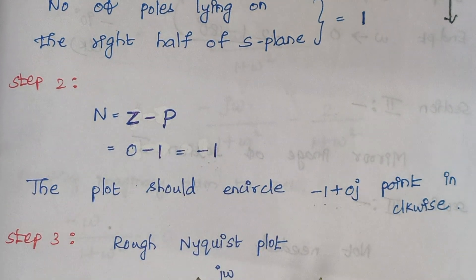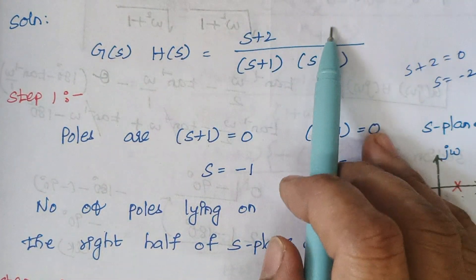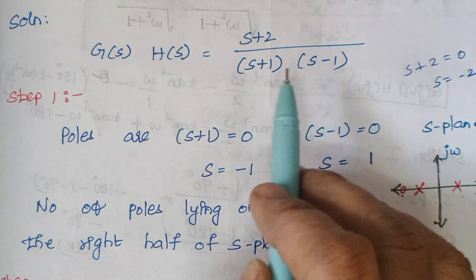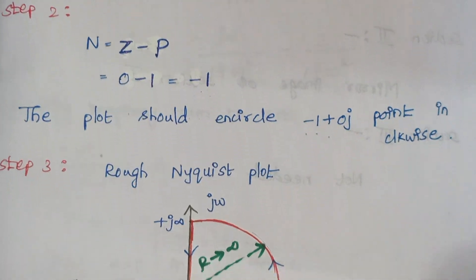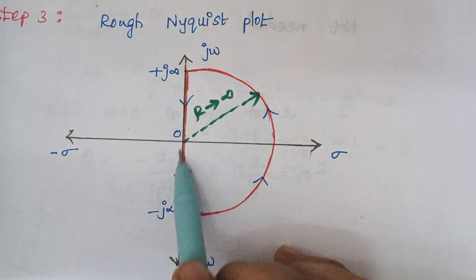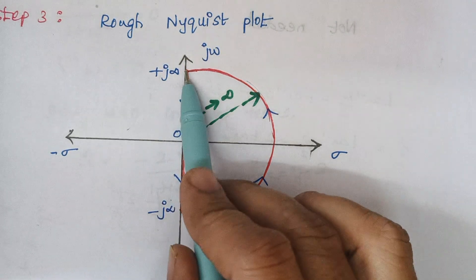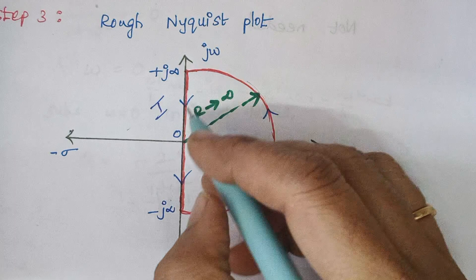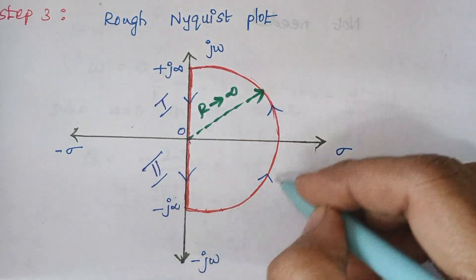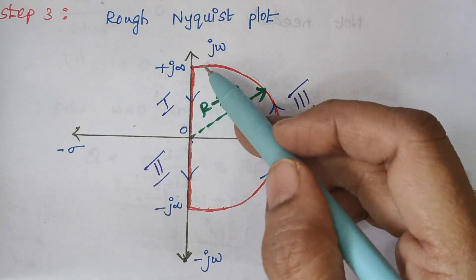Step 3 is drawing a rough Nyquist plot. In this problem we are not having any poles at the origin — there is no individual s term in the denominator. Our rough Nyquist plot covers the origin and has three different sections: Section 1 starts at plus j infinity and ends at 0; Section 2 starts at 0 and ends at minus j infinity; and Section 3 starts at minus j infinity and ends at plus j infinity.